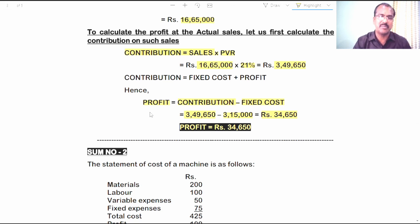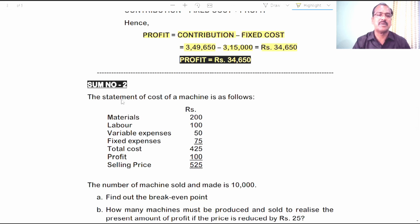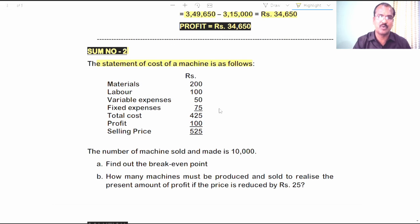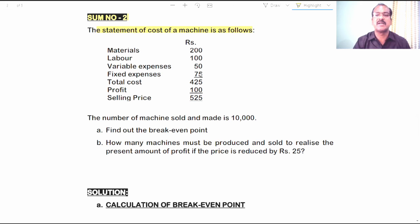This is what sum number 1. Let us get into sum number 2. The statement of cost of a machine is as follows: material 200 rupees, labor 100 rupees, variable expenses 50 rupees — totaling the variable cost per unit. Fixed expenses: 75 rupees per machine. Total cost: 425 rupees. Adding profit of 100, you get the selling price of 525 rupees per unit.